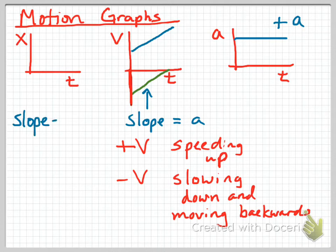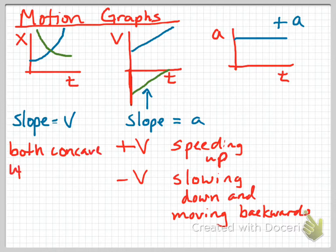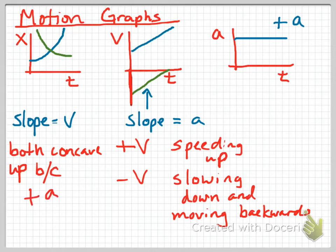When we look at a position versus time graph, the slope is velocity. The blue line, with positive velocity and positive acceleration, starts not extremely fast and then increases. The green line starts very fast going backward, then slows down. Both of these position versus time graphs are concave up, because they both have a positive acceleration. Any time you have a position versus time graph that is concave up, it represents a positive acceleration.